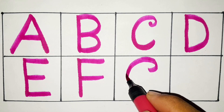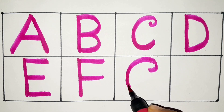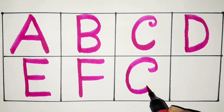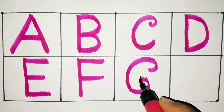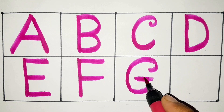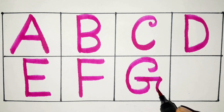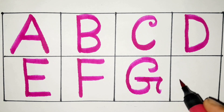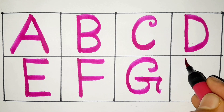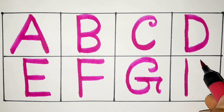N, O, P, Q, R, S, T, U, V, W, X, Y, and Z. Now I know my ABCs, next time won't you sing with me?